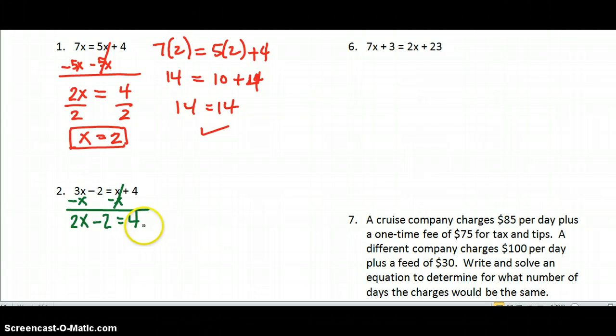So that cancels out, and I have 2x minus 2 equals 4. Now I need to get the number without x over to the right. So that's a negative 2, the opposite of subtracting 2, or the opposite of negative 2 is positive 2. That lets the 2 cancel out, and 2x equals 6. Now to solve for x, we'll divide both sides by 2. That isolates x, and we find out that x is 3. We always want to take time to check, so we make sure we did our problem correctly.